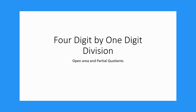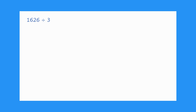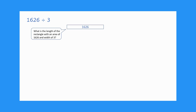Because division is a missing factor problem, finding the quotient can be thought of as finding one dimension of a rectangle when the area and one dimension are known. Let's start with the problem 1626 divided by 3. We can think of this as: what is the length of a rectangle that has an area of 1626 and a width of 3? What is the missing side length?